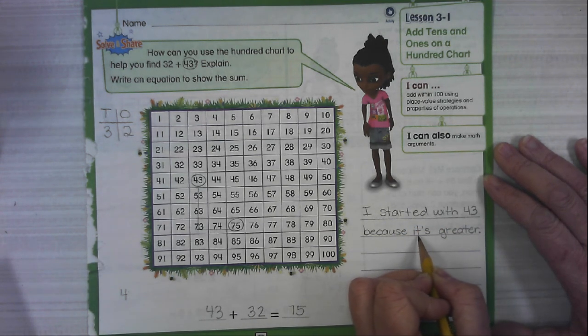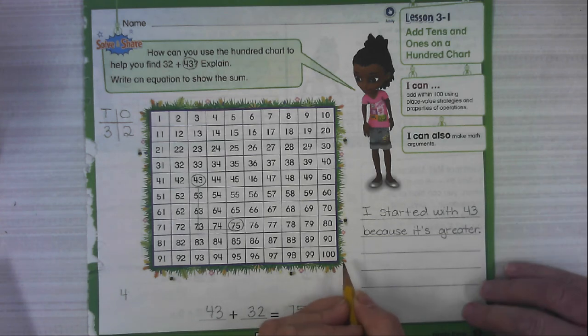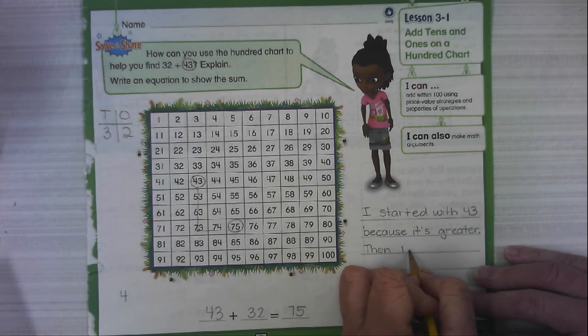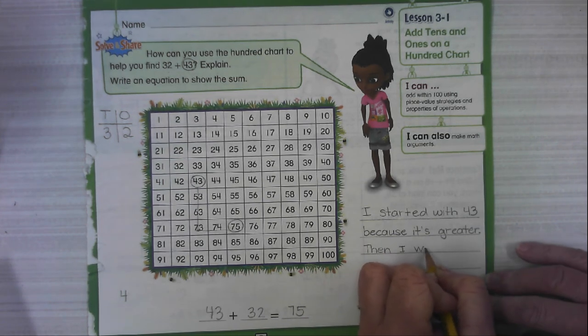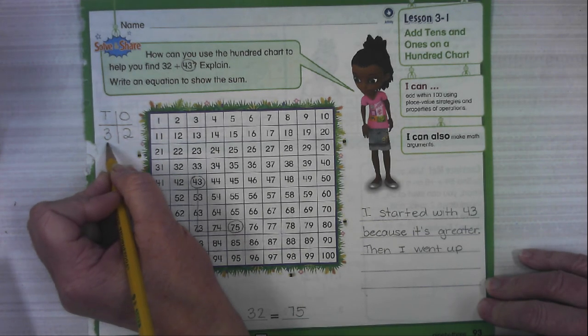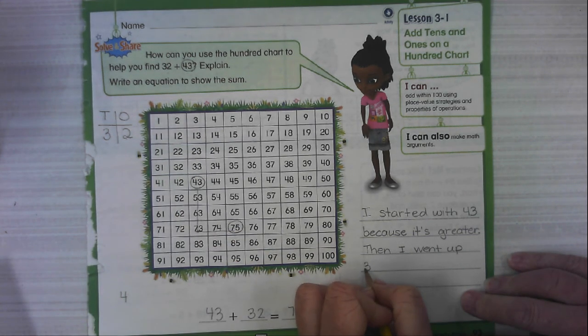This is it's with an apostrophe because it means it is. Then I went up, what do we go up? Three tens.